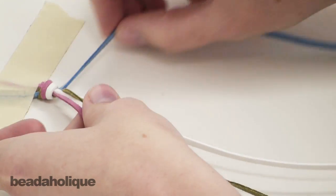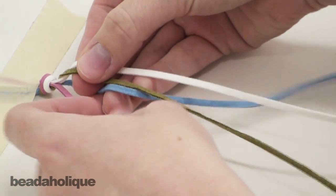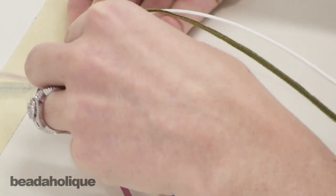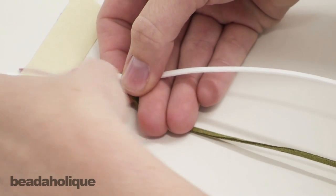And then you're going to take the rightmost braid and bring it around the middle two and then through the center of them.